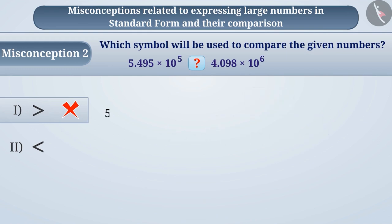Let's understand this better. We can write 5.495 × 10⁵ as 5,49,500. Similarly, we can write 4.098 × 10⁶ as 40,98,000.